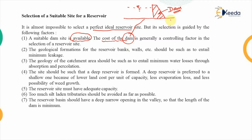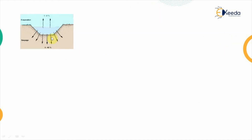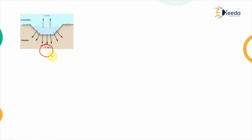The next factor is geological formations. The reservoir banks and walls should be such as to entail the minimum leakage. Looking at the cross-sectional view, if this is the channel with walls on the sides and a pool of water, there should be minimum leakage - no cracks or fissures in the rocks. Otherwise there will be seepage losses, which usually account for 5 to 40 percent of the total losses.